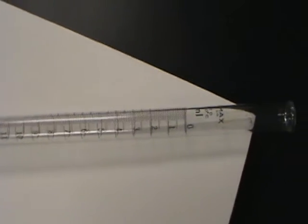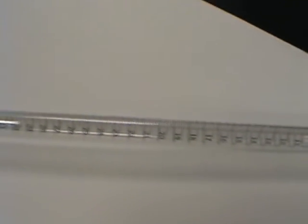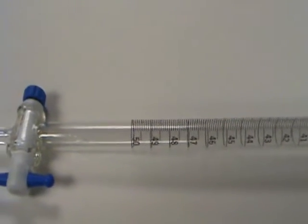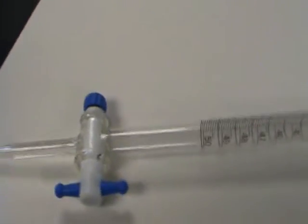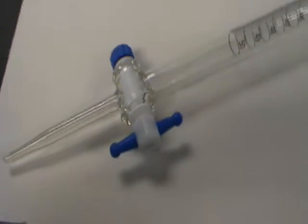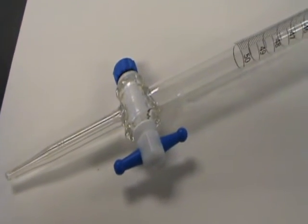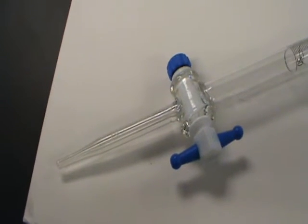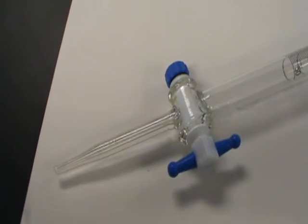We start out with a graduated tube, and you see this particular burette is graduated all the way to 50 milliliters. And at the bottom of the tube, there's a stopcock to control the flow and a jet tip to allow us to dispense very small amounts.